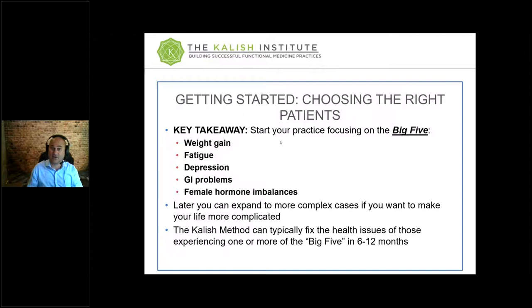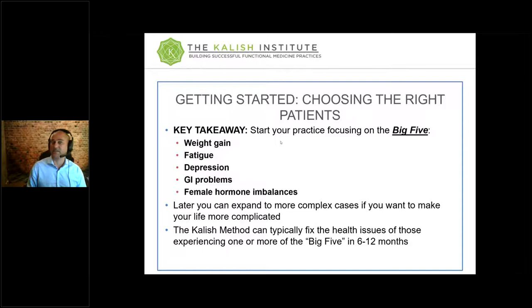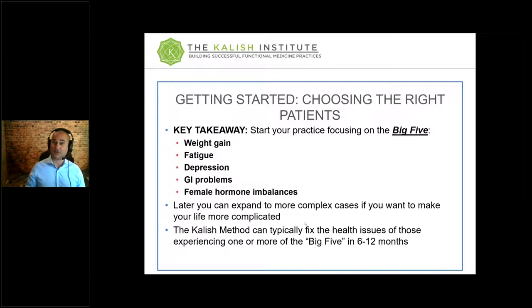One of the most important pieces of general advice is just start with easy patients — people who want to lose weight, are tired, maybe depressed, have GI problems, or some female hormone imbalances. These are things that are easy to solve in a functional medicine context almost all the time. I call them the big five: fat, fatigue, depressed, GI, and female hormone issues, because they're so consistently responsive to functional medicine. It doesn't take long and you don't have to be the Michael Jordan of lab interpretation to make these programs work. They're pretty straightforward.